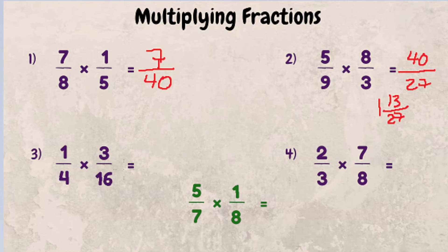Third example. What is 1 fourth times 3 sixteenths? 1 times 3 is 3. 4 times 16 is 64. That can't be simplified, so you're done.